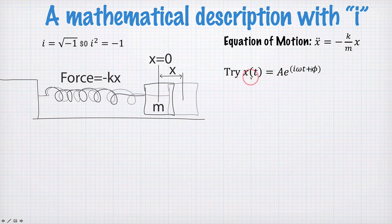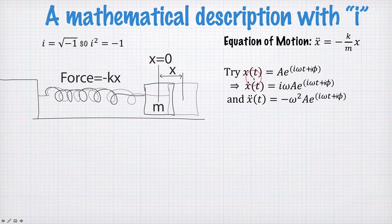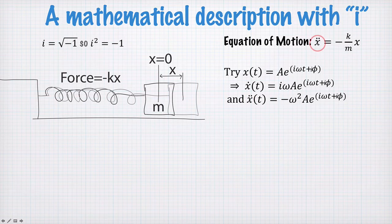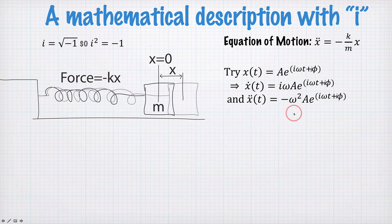We're going to try a solution of this form: x is equal to A e to the i omega t plus phi. So we're using our i here and our complex exponential, which we know is related to sine and cosine functions. So we need to find the second derivative, x double dot, and we substitute x double dot into this side of the equation and x into this side of the equation and find some condition on omega such that we can solve our equation.